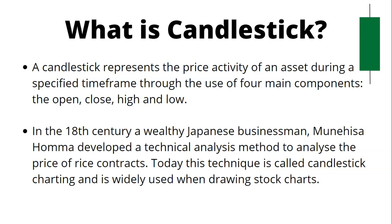The four main components are opening price, closing price, high, and low price. In the 18th century, a wealthy Japanese businessman Munehisa Homma developed a technical analysis method to analyze the price of rice contracts. Today this technique is called candlestick charting and is widely used when drawing stock charts.